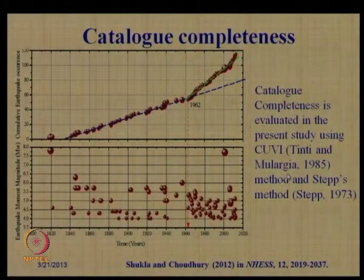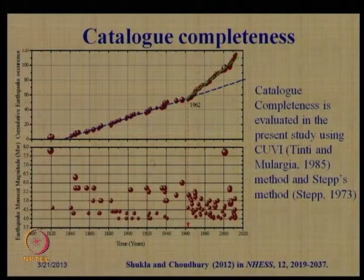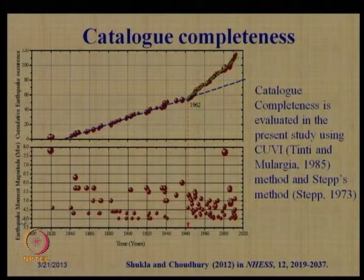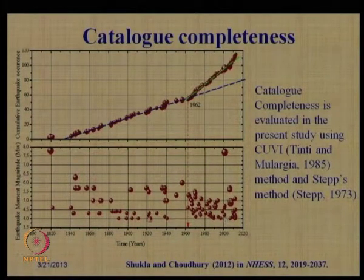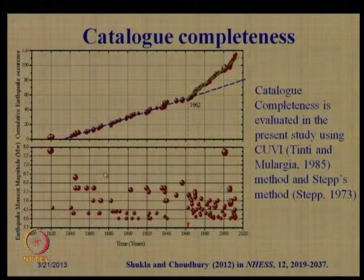We also covered the earthquake catalogue and how to check catalogue completeness. The earthquake catalogue uses the MW magnitude scale, taking all magnitudes equal to and above 4. Recordings are available from 1820 to 2012, and all data points have been collected.